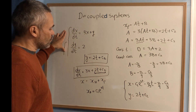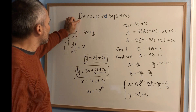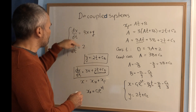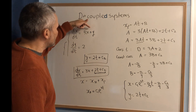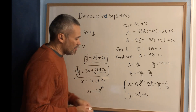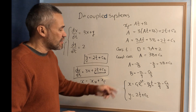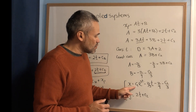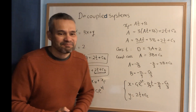We were looking for two functions, and here they are. It's a decoupled system because one of the equations only has one function. We solve that one first, replace it into the other, and use the techniques we have learned to solve it. The general solution has two constants, c1 and c2.